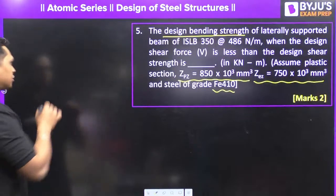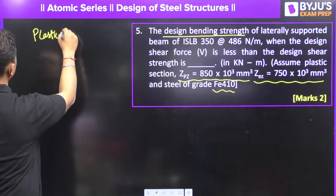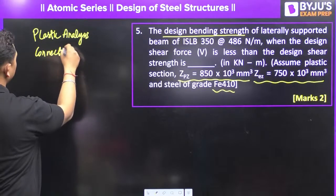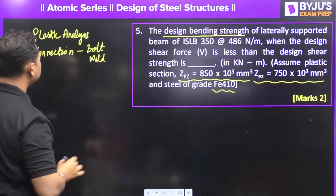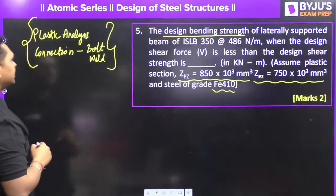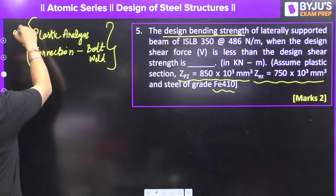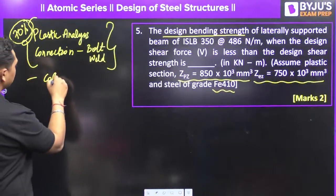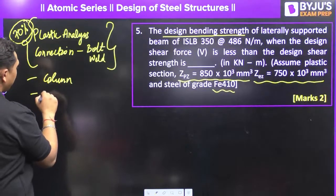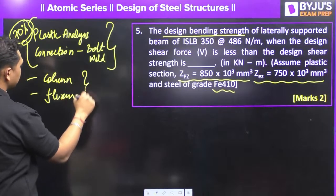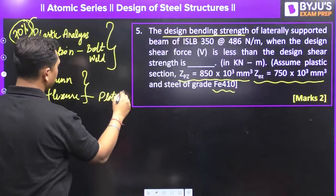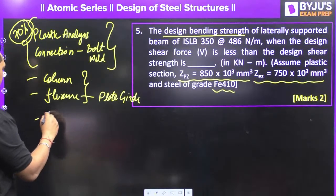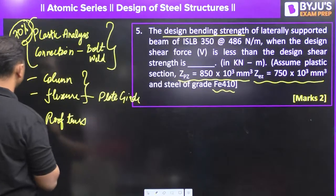At minimum, you should be studying plastic analysis and connections — both welded and bolted — as these two-three topics take up to 70 percent of questions generally asked. Beyond that, you can study compression members and flexural design including plate girder. Roof truss is a smaller topic you can also cover.